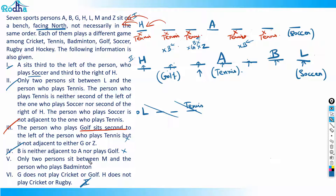Point five: only two persons sit between M and the person who plays badminton. I write M and badminton with a gap of two outside the table. Next, G does not play cricket or golf — I write this outside as a cross: G doesn't play cricket and G doesn't play golf, and G is not in the golf position we already marked.